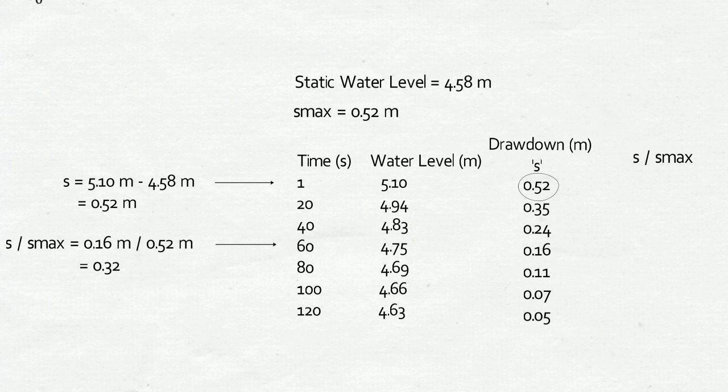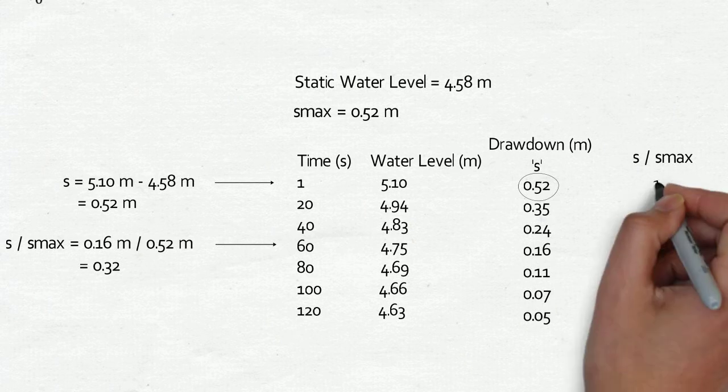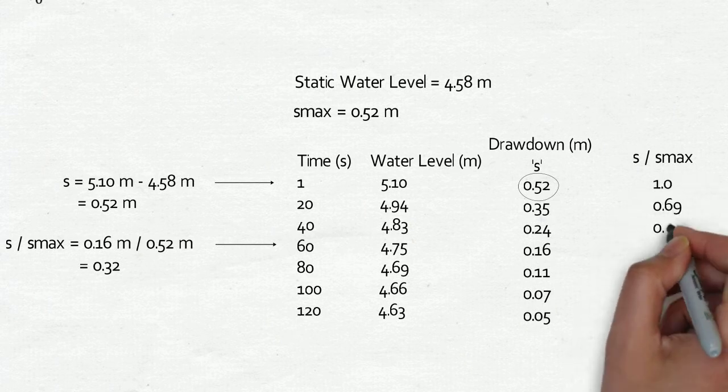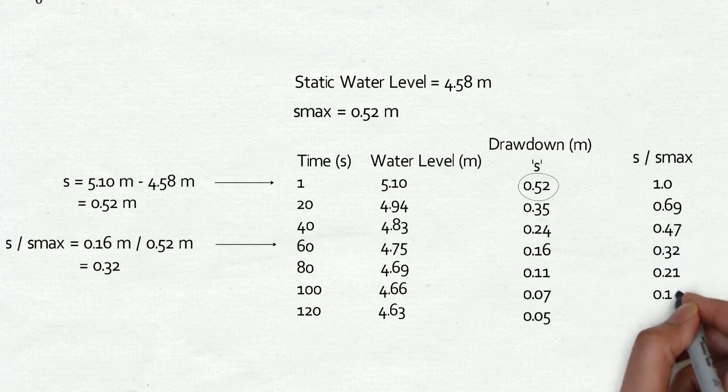Normalized drawdowns are unitless. Repeat the calculation for the rest of the values in the table, each time dividing the observed drawdown by 0.52 meters.